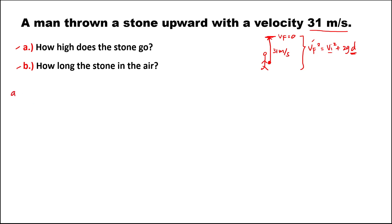To find the displacement of the stone, we have: final velocity squared equals initial velocity squared plus 2 times gravity times displacement. Again, at the maximum height the final velocity is equal to 0, so: 0 equals 31 meters per second squared plus 2 times gravity.